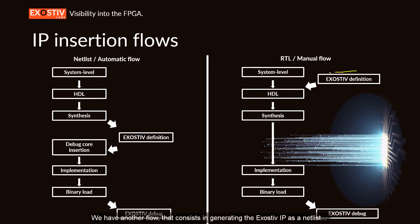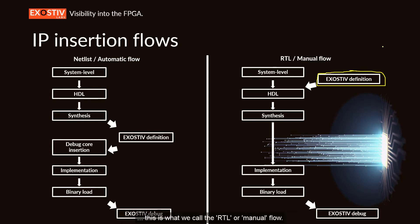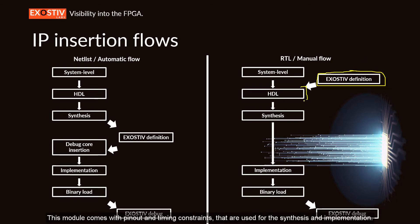The second flow consists in generating the Exhaustive IP as a netlist together with a wrapper and a template for insertion. This is what we call the RTL or manual flow. It requires manually modifying the VHDL or Verilog code to insert the generated module, which comes with pinout and timing constraints used for synthesis and implementation.